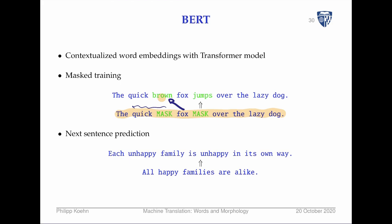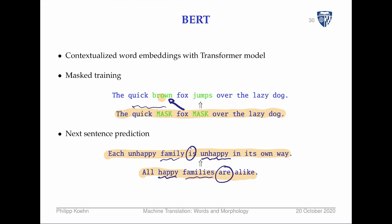Another BERT training task is next sentence prediction. Given a first sentence like 'All happy families are alike', how likely are you to predict 'Each unhappy family is unhappy in its own way' as the next sentence? Words like 'unhappy' given the previous mention of 'happy' are more probable, and repetition of 'family' in a different morphological variant is also a clue. A model representing words must be able to exploit these similarities.